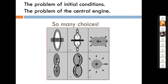When it comes to the problem of initial conditions and of the central engine, the problem is really one of an abundance of possibilities. This is from that Annual Reviews paper. As you can see, here are six different possible scenarios for generating planetary nebulae — four different scenarios with two different kinds of central engines.